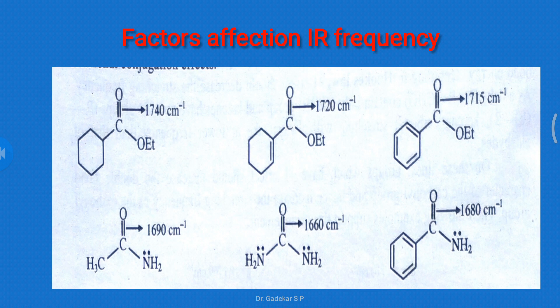Regarding factors affecting IR stretching frequency: different compounds act as electron-donating or electron-withdrawing groups. For example, OEt (ethoxy) is both electron-donating and electron-withdrawing; it appears at 1740 cm⁻¹, but due to conjugate effect it decreases the IR stretching frequency to 1720 cm⁻¹. An amine group acts as an electron donor, decreasing the carbonyl group electron density and decreasing the IR stretching frequency.